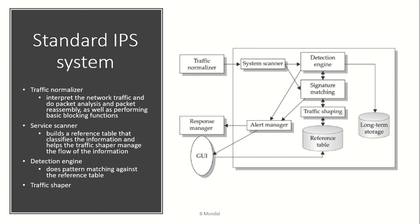The IPS system has mainly four components. Traffic coming from outside goes through a traffic normalizer which normalizes it, then it goes to the system scanner, which scans it and sends the result either to the detection engine or to signature matching.